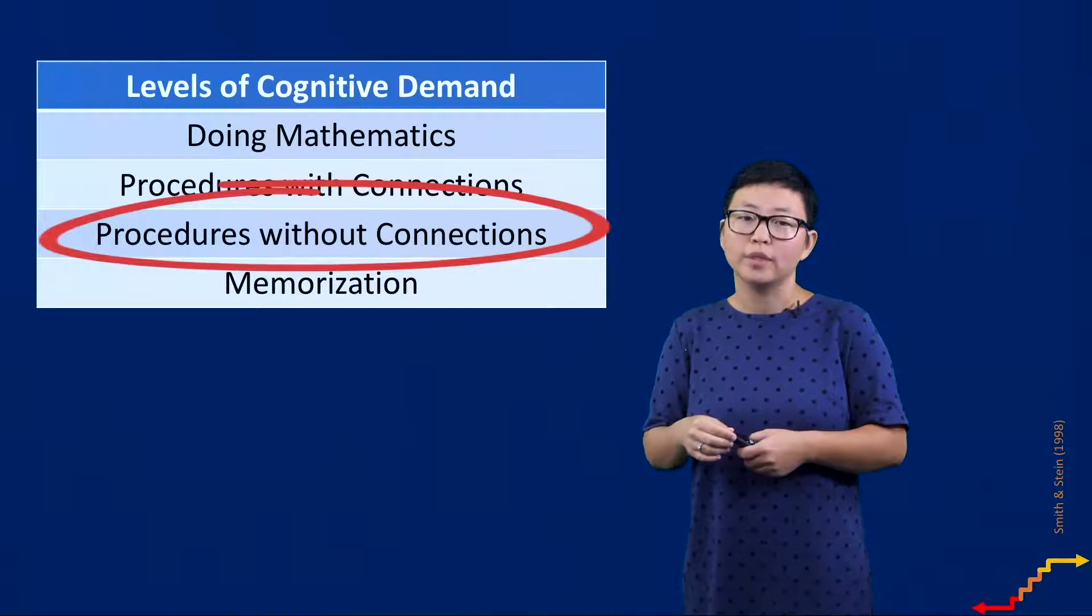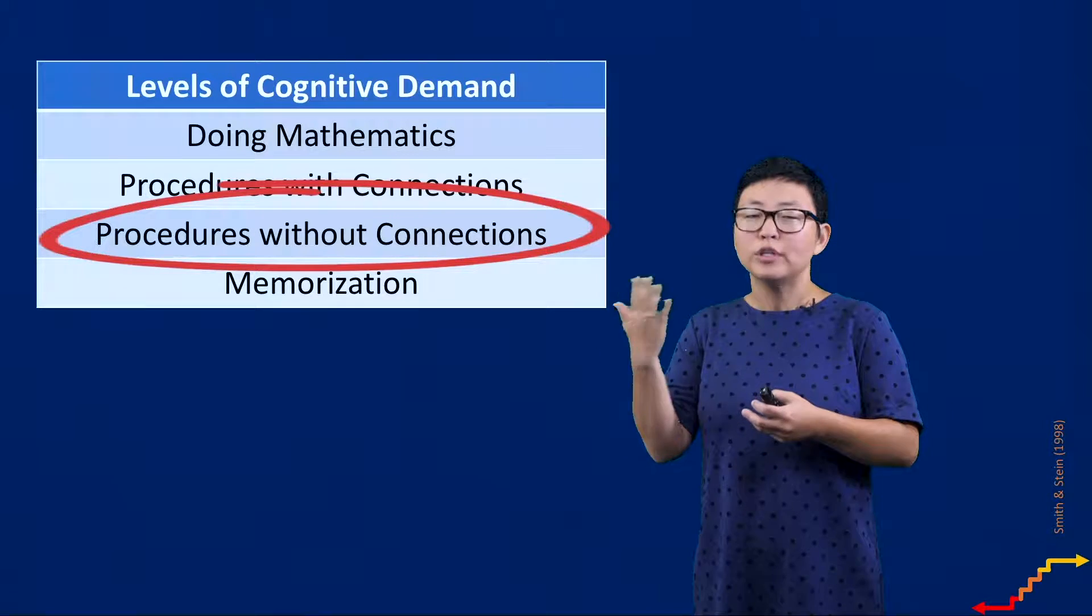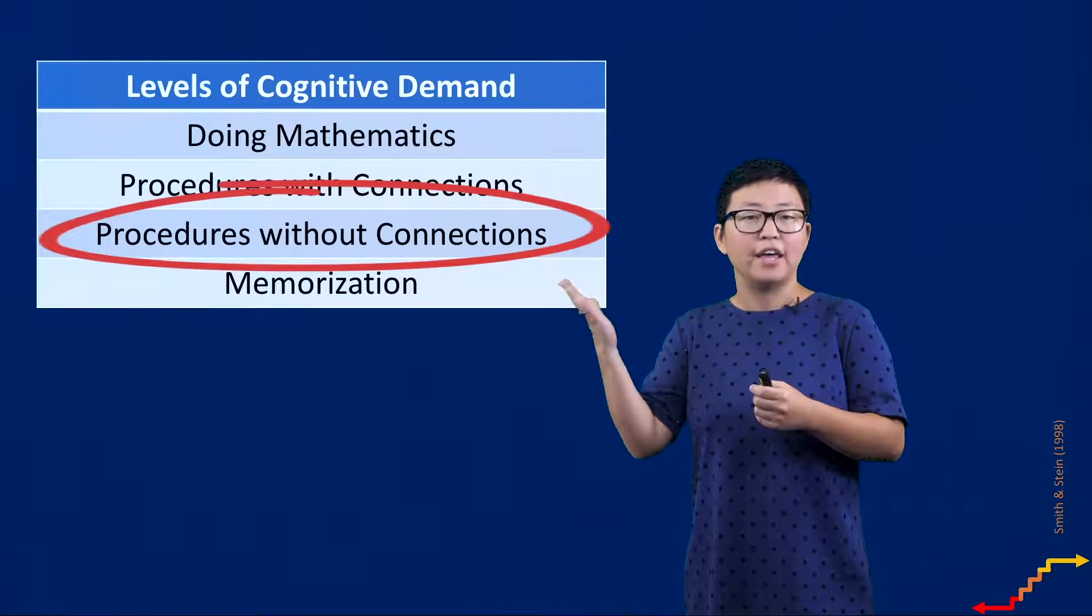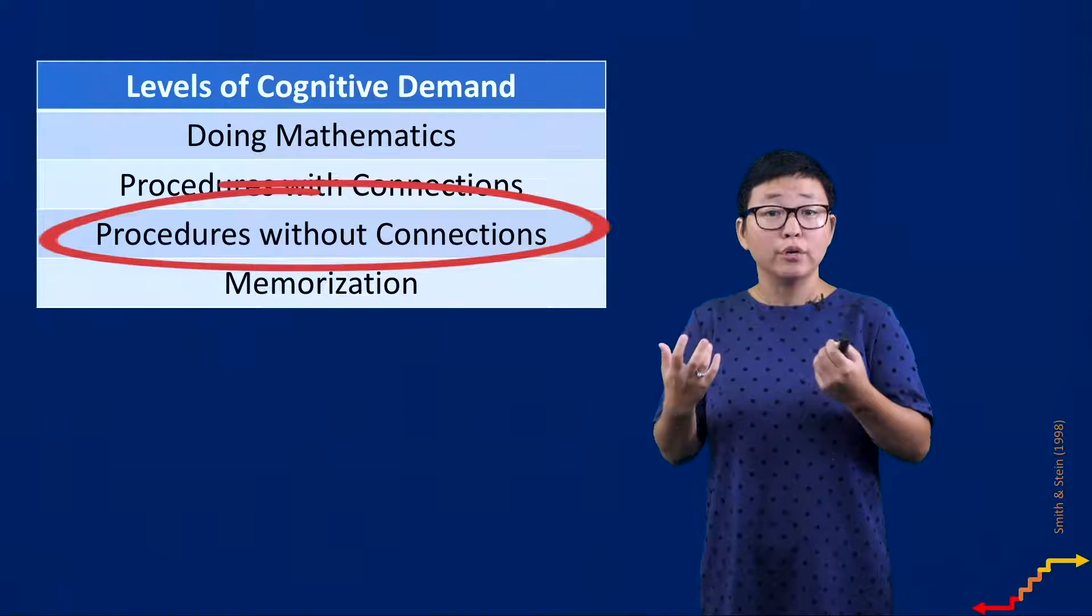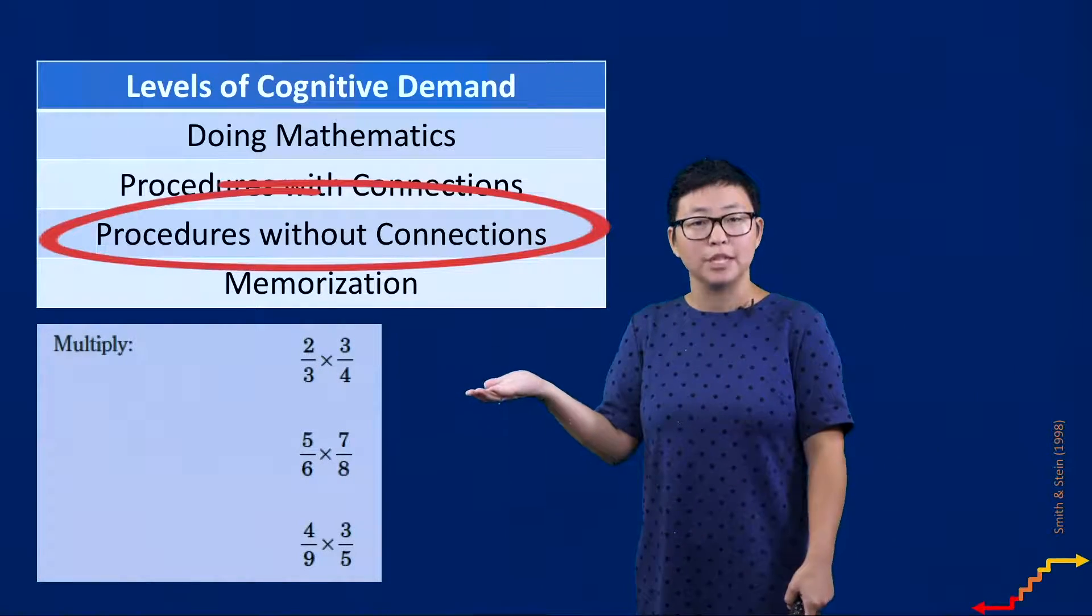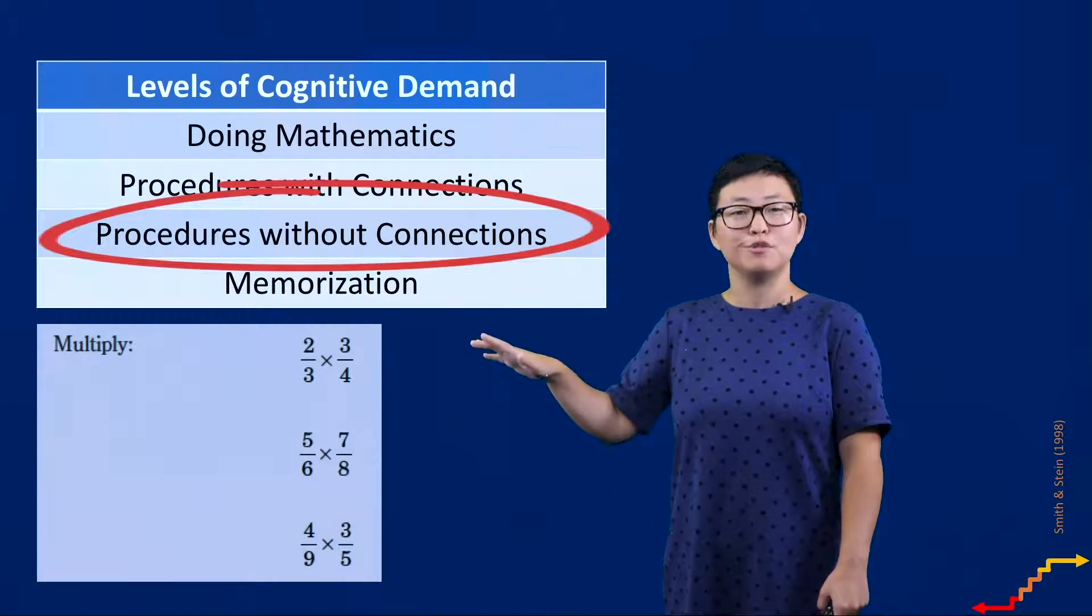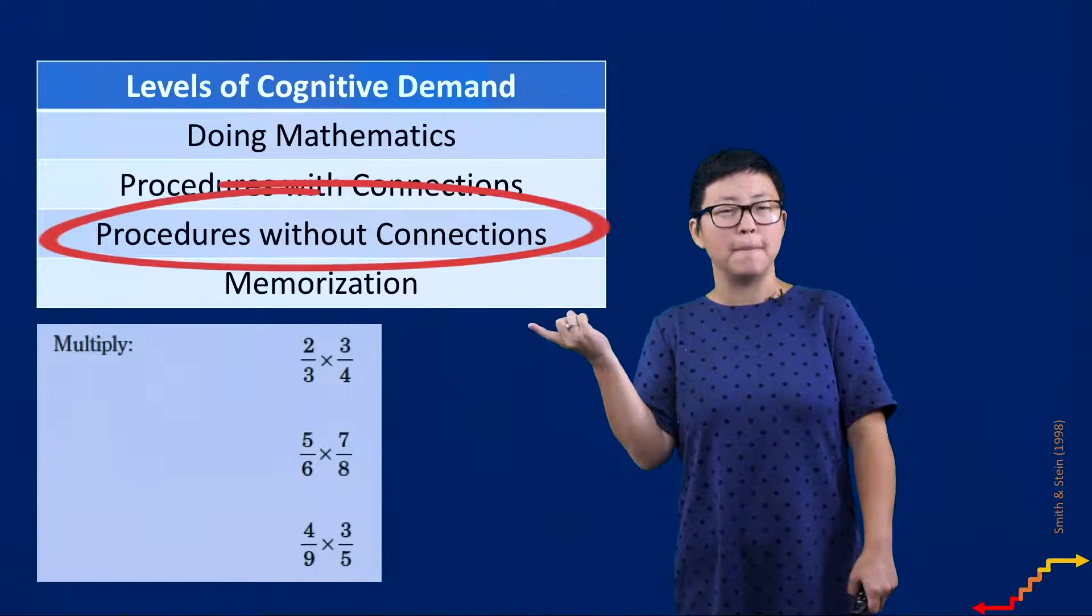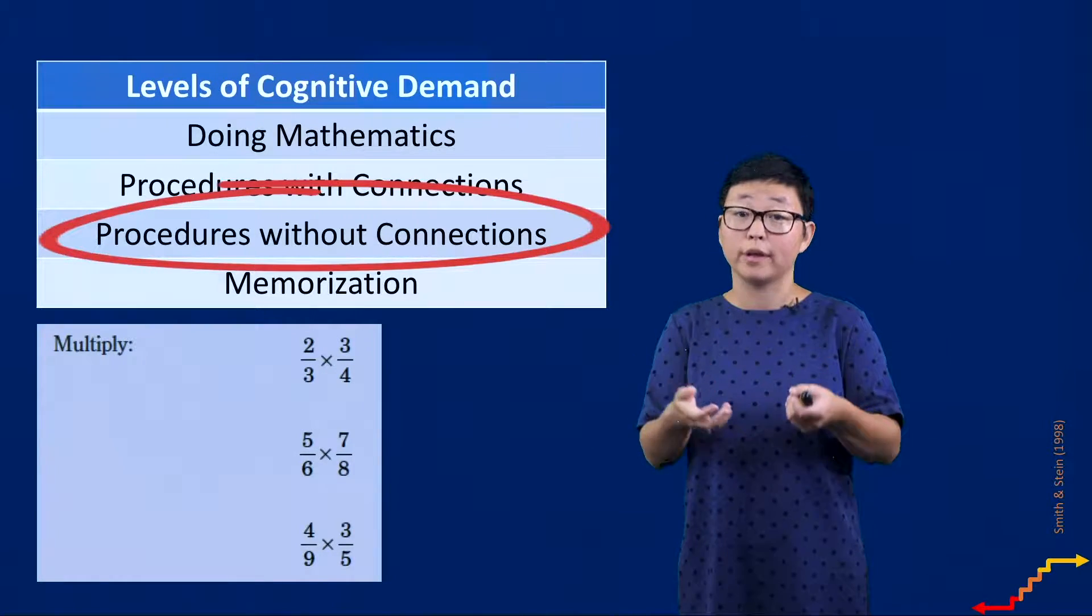Next we're going to talk about procedures without connections. At this level, tasks tend to be very procedural but really absent from any underlying connection or meaning. Here you're having students talk about procedures or formulas, but the task doesn't give the opportunity for students to reason about whether or not that's accurate or to make connections with other mathematical ideas. An example of this would be a problem or a set of problems that look like this. Here students could generate accurate answers, they might even do it quickly, but we don't really know what students know about multiplying fractions. This type of task is more than just having them memorize the procedure; here it's where students carry out the procedure but with no underlying connection or opportunity to explore the concept in a deeper way.